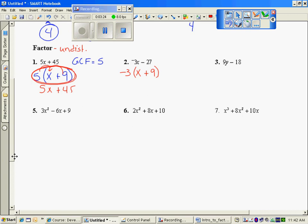Question number 3, 9y and 18, they both share a 9, so 9 times y minus 2. When I redistribute, 9y minus 18. So that checks my factoring.